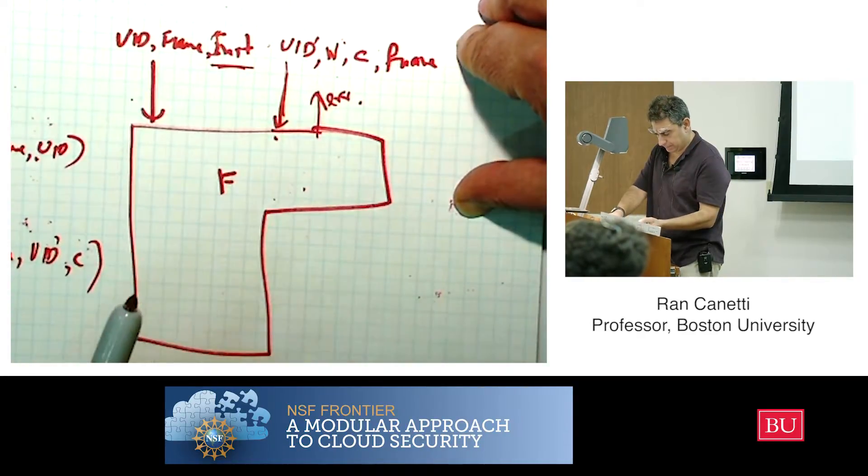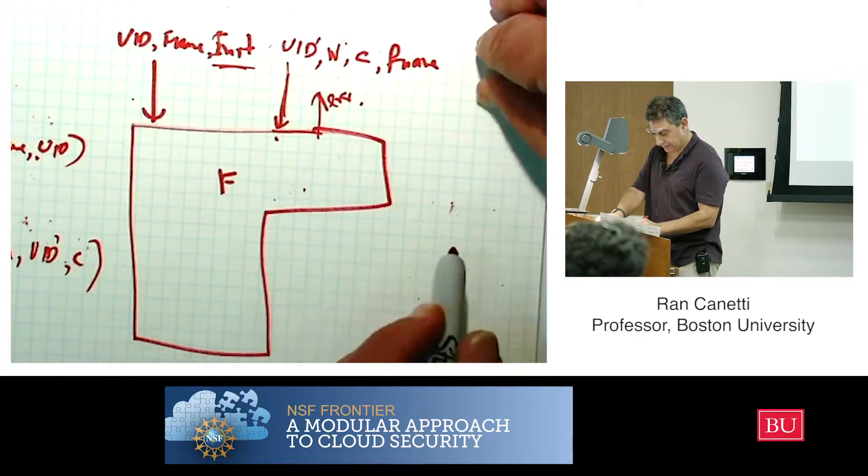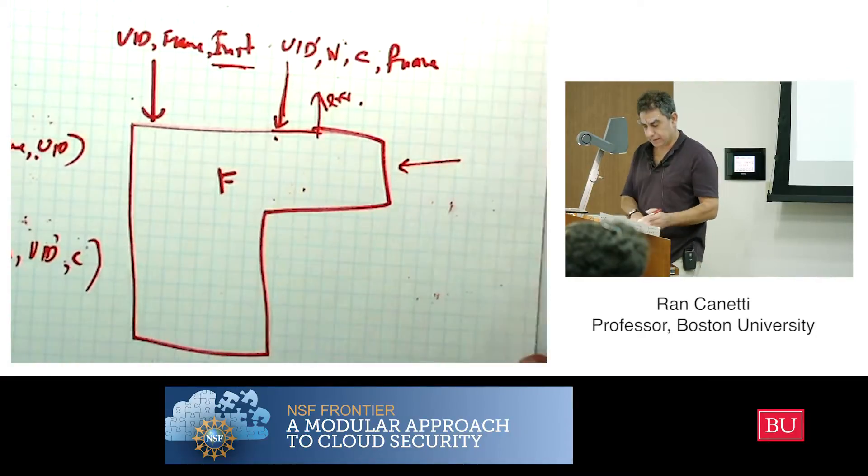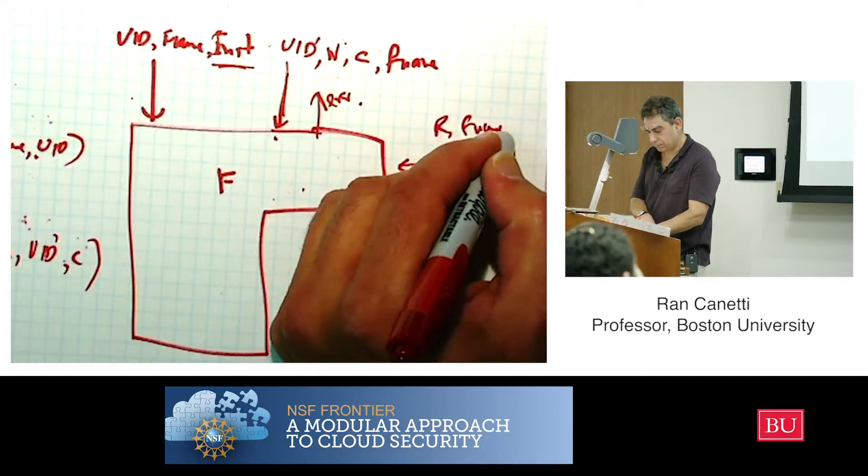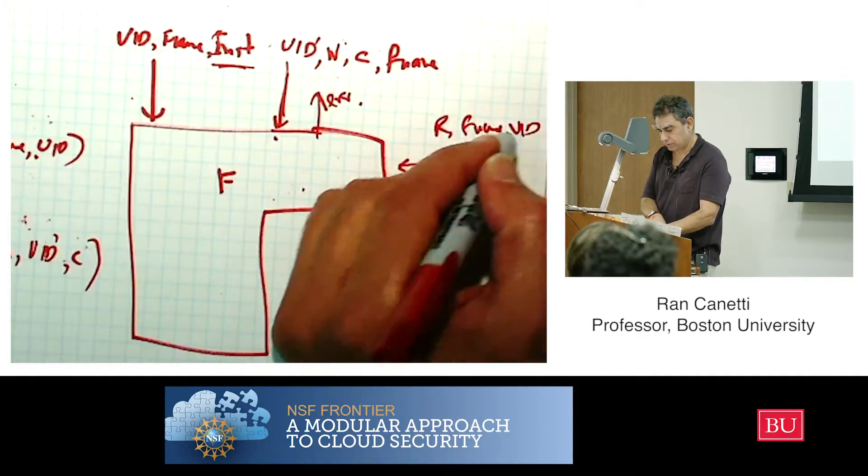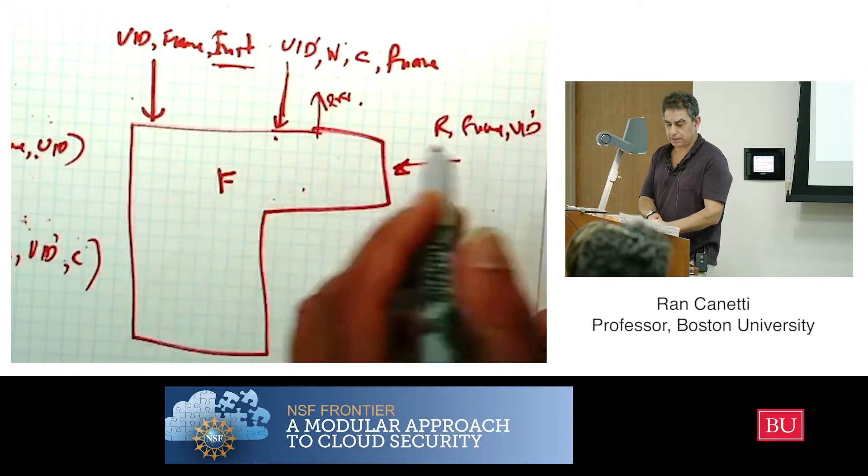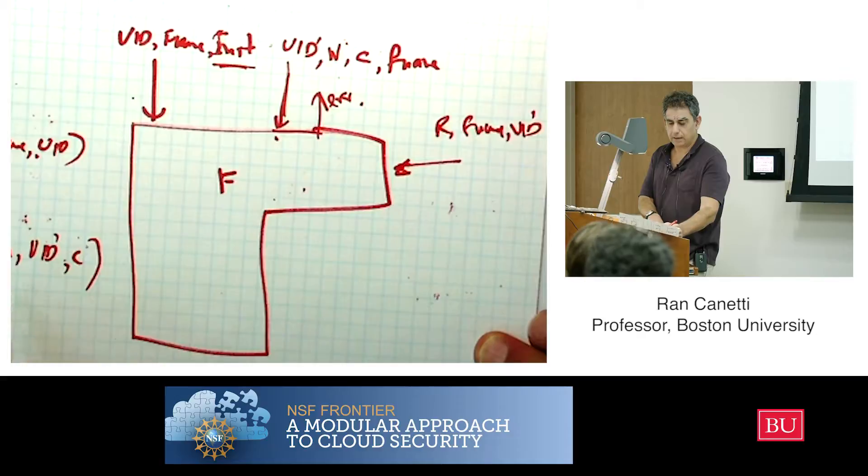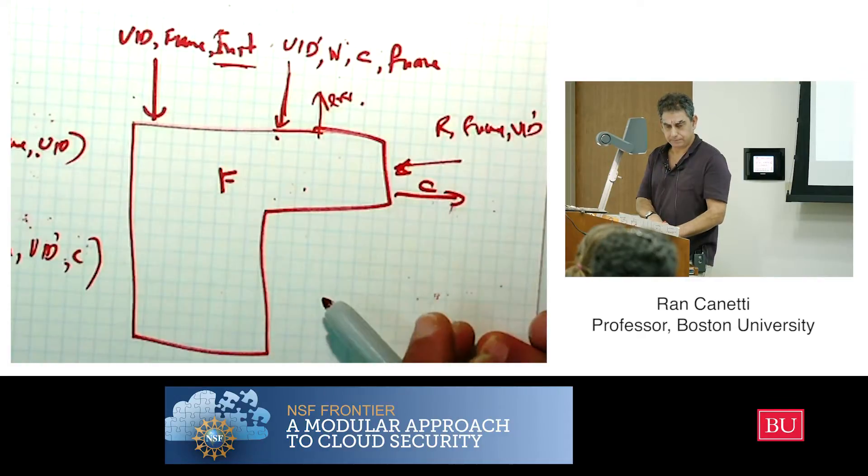Now, the last thing is going to be read. If I get a read input, then I'm going to read F name UID prime. In this case, I'm not checking anything. I'm just going to database and looking at the last entry of this filename and the contents, and I return the contents.